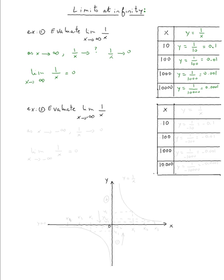Now let's do Example 2. We try to evaluate the limit of one over x as x approaches negative infinity. Let's put y equal one over x. X approaching negative infinity means we need to pick numbers that are getting larger and larger in magnitude but negative. When x is minus ten, y equals one over minus ten, which is negative 0.1. When x equals negative one hundred, y equals negative 0.01. When x is negative one thousand, y equals negative 0.001.